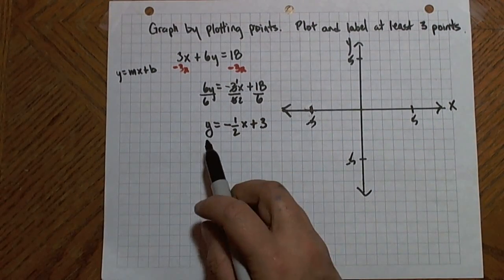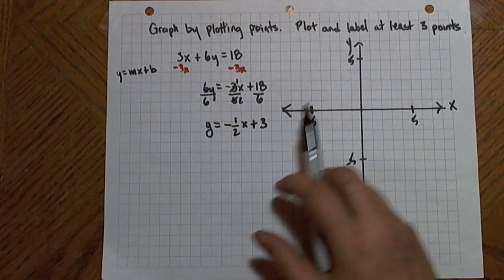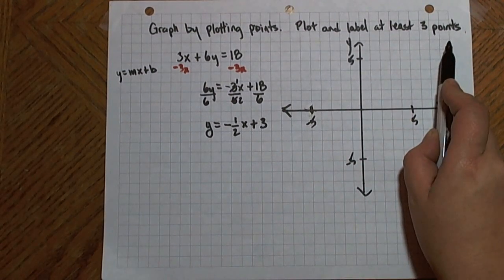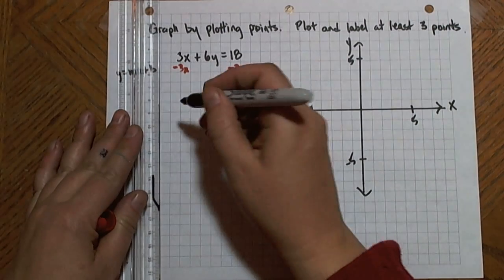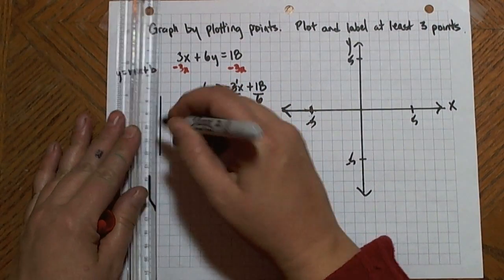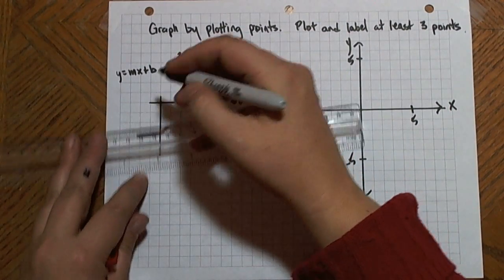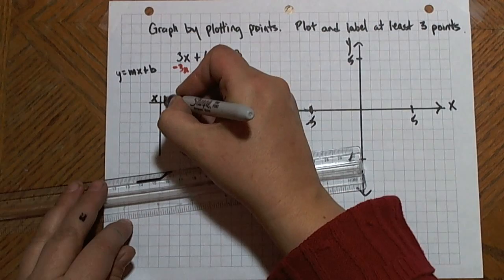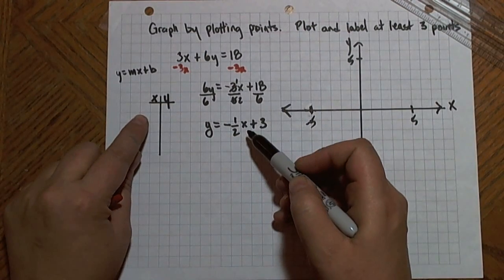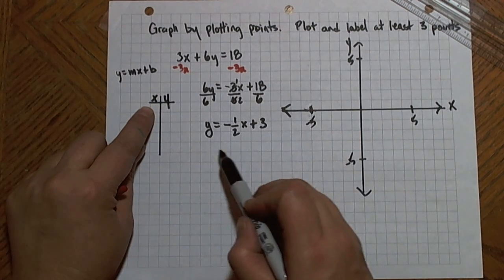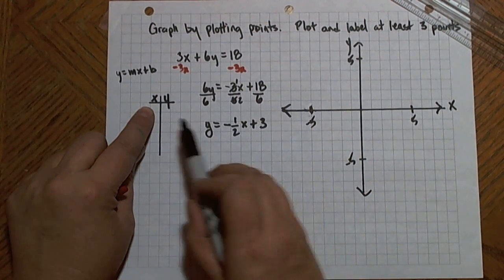So now I have an equation that's in y equals mx plus b form, and I want to find 3 points to plot. So I'm going to make a table to organize my work. And in my table I'm going to have values for x and values for y. What I'm going to do is choose a value to put in for x, substitute that into my equation, and find the corresponding y.